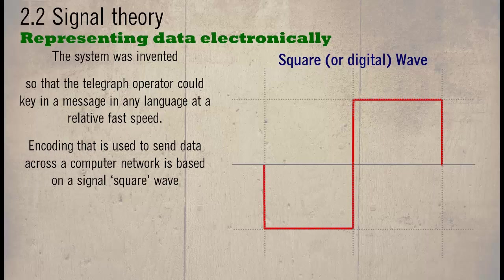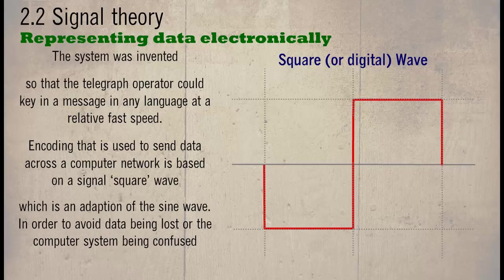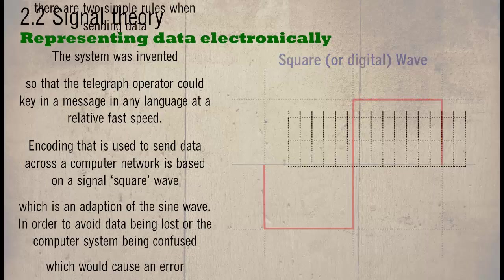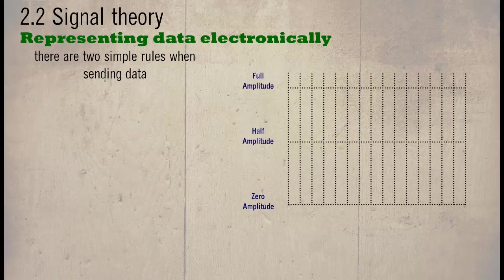Encoding that is used to send data across a computer network is based on a signal square wave, which is an adaptation of the sine wave. In order to avoid data being lost or the computer system being confused, which would cause an error, there are two simple rules when sending data.